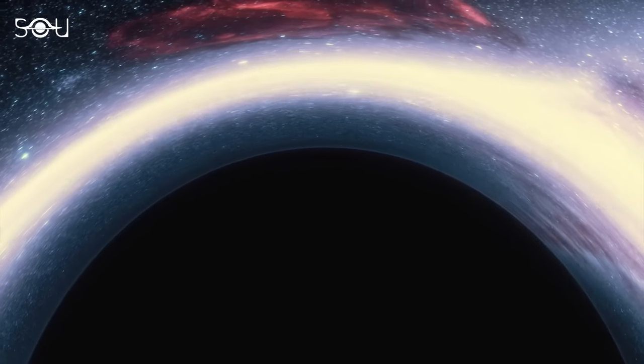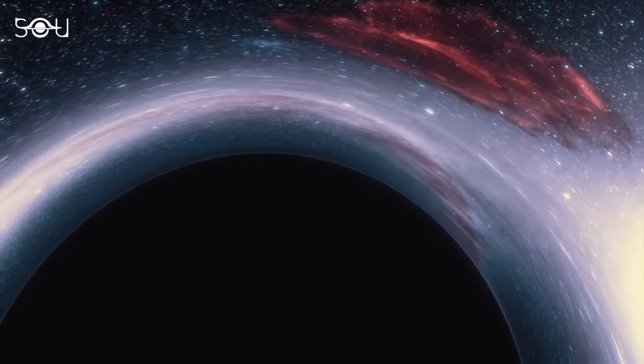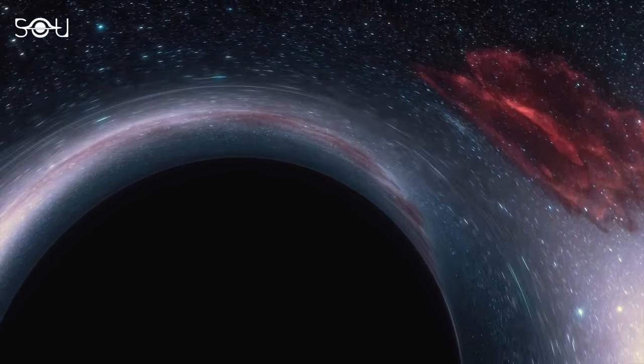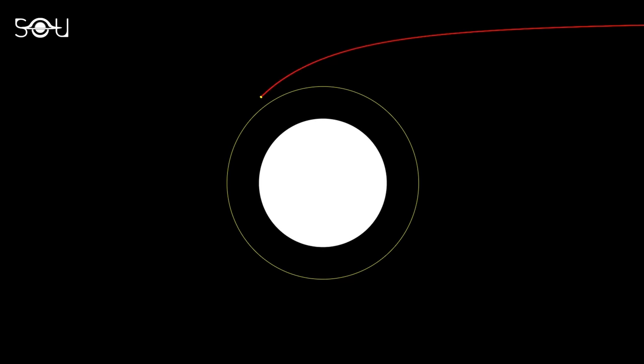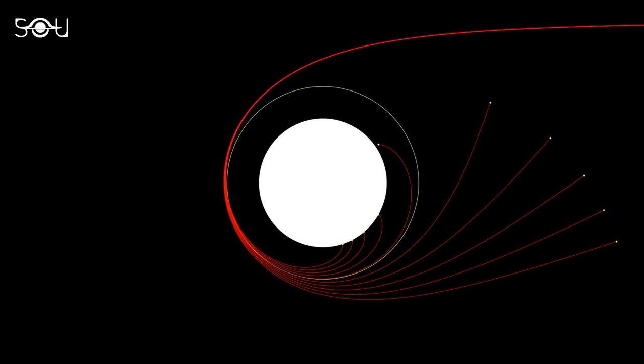The event horizon of a black hole is the point of no return. The gravitational force at that boundary is so powerful that even light, the fastest known entity in the universe, cannot escape.